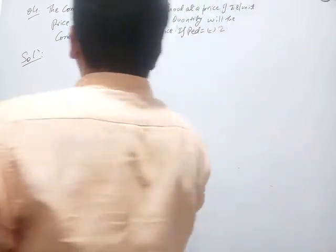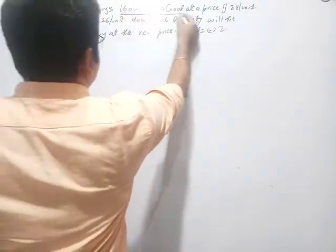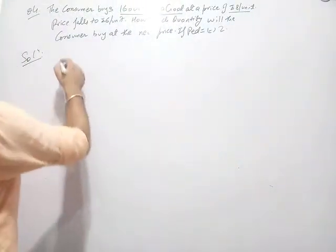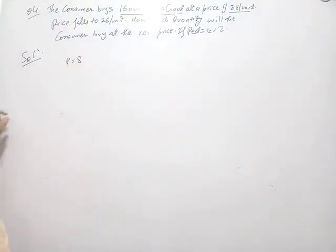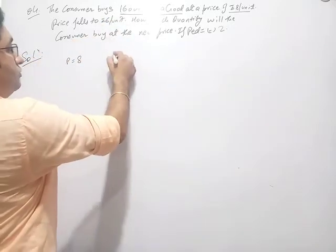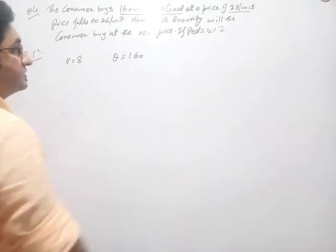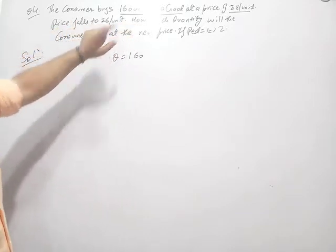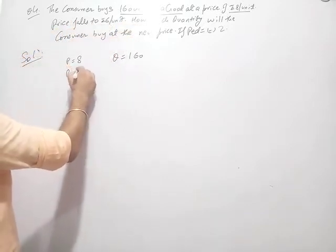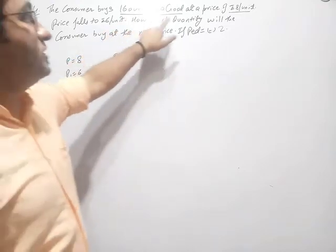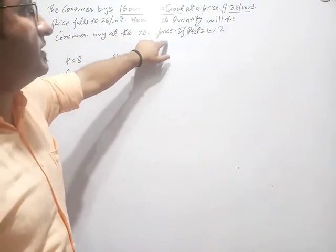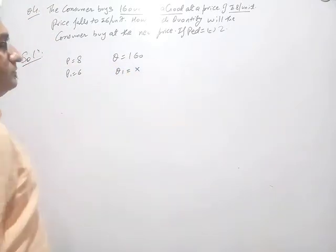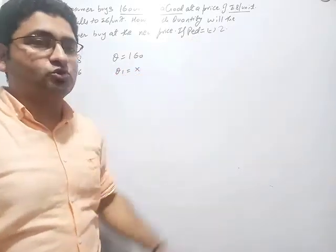The next question: a consumer buys 160 units of a good at a price of Rs. 8 per unit, so P equals 8 and Q equals 160. Price falls to Rs. 6, so P1 is 6. How much quantity will the consumer buy at the new price? We have to find out Q1, given that PED is equal to minus 2.